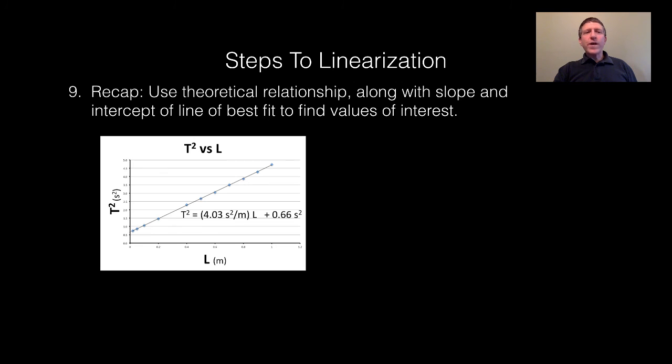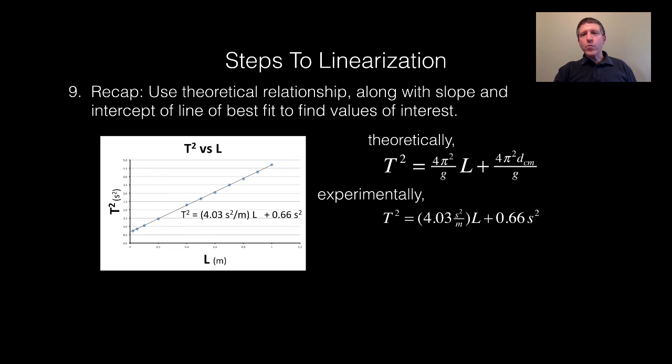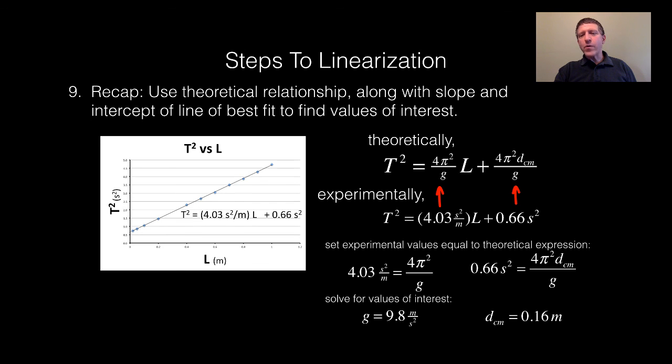Here's a quick recap. What you do is you use the theoretical relationship along with slope and intercept of the line of best fit to find values of interest. Here was the final updated theoretical relationship between T and L. We found our experimental relationship from the line of best fit of the linearized graph, and then we just set our experimental values to the theoretical expressions to find the unknowns that we are looking for.